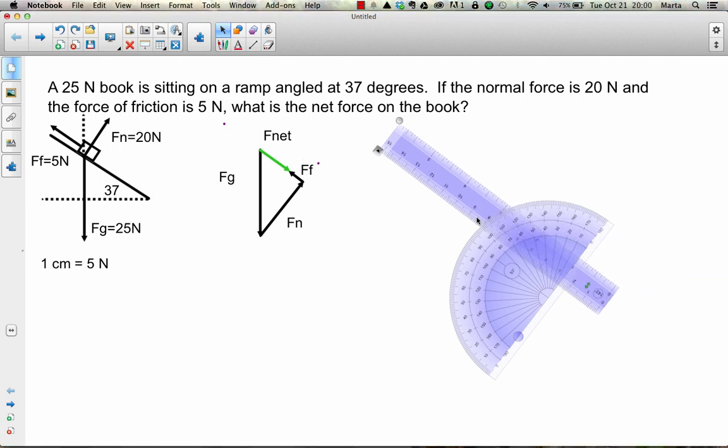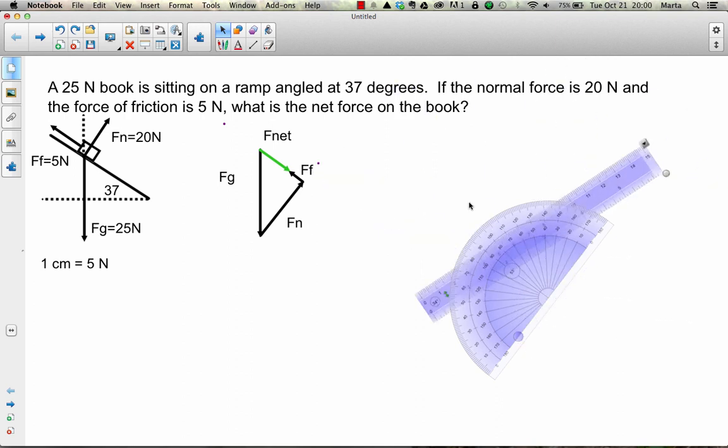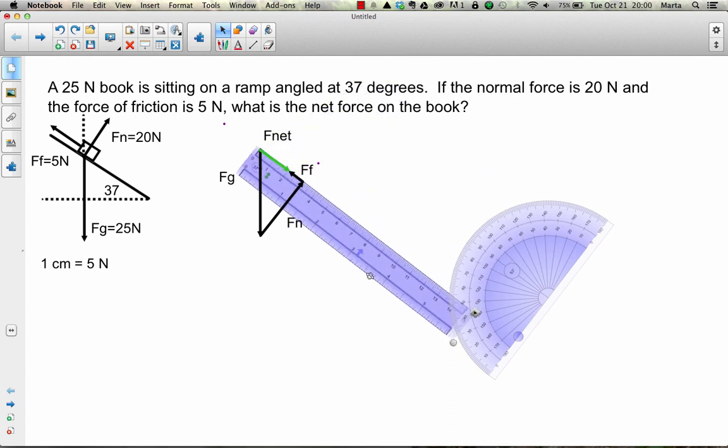The very last thing I need to do is turn the length of that net force arrow into a number in newtons. The way I'm going to do that is just by taking my ruler and measuring how many centimeters long that is. I've got two centimeters, and I could do a quick factor label to convert that into 10 newtons.